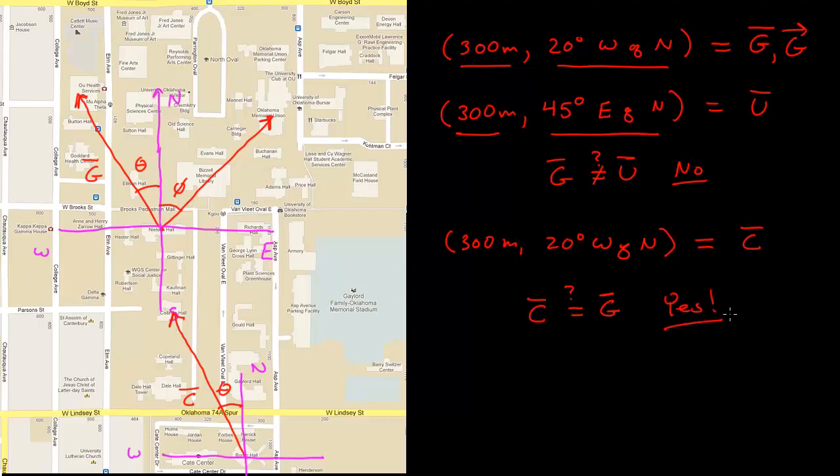And this brings up one very important part of vectors. These vectors are not defined by initial or final point. It is not defined by where it's starting or ending. It's only defined by its magnitude and direction.